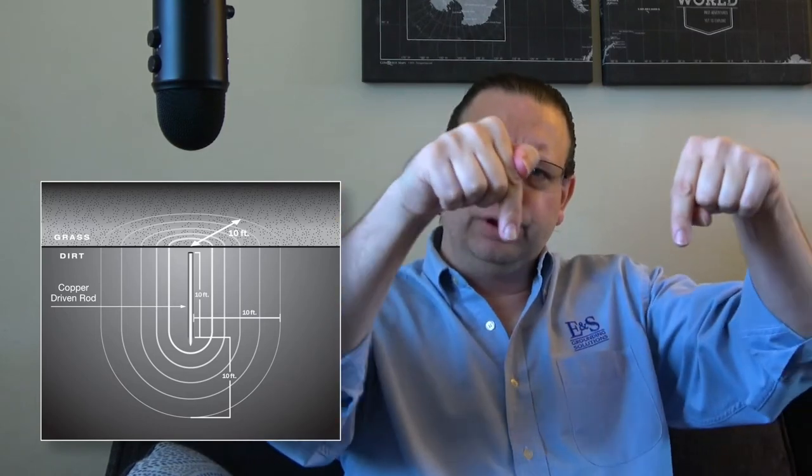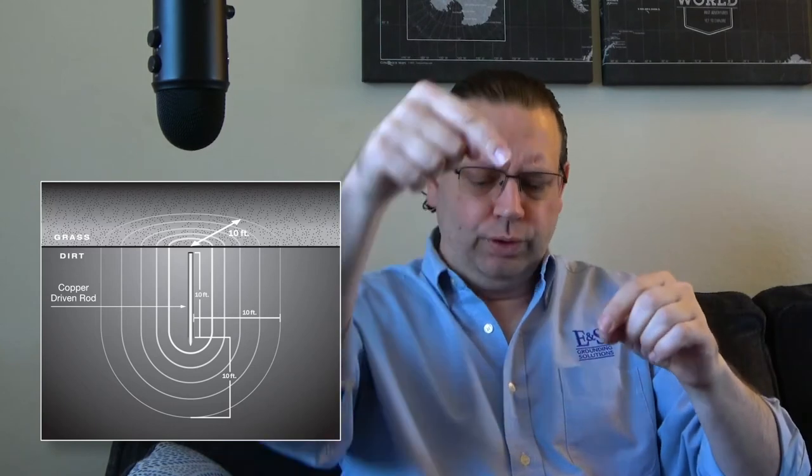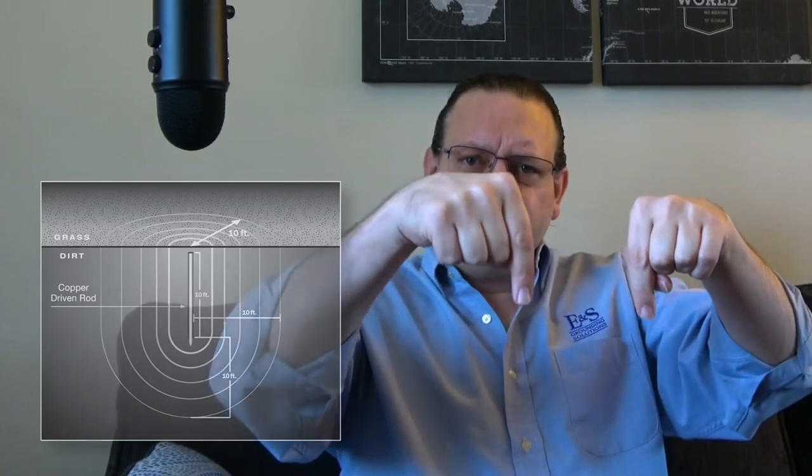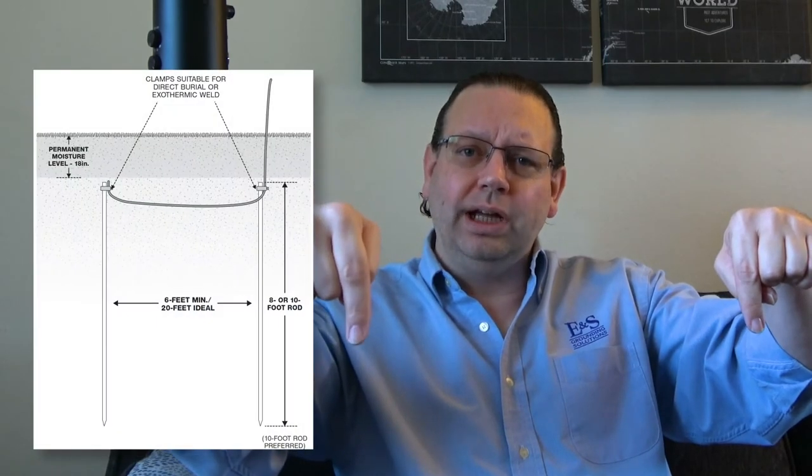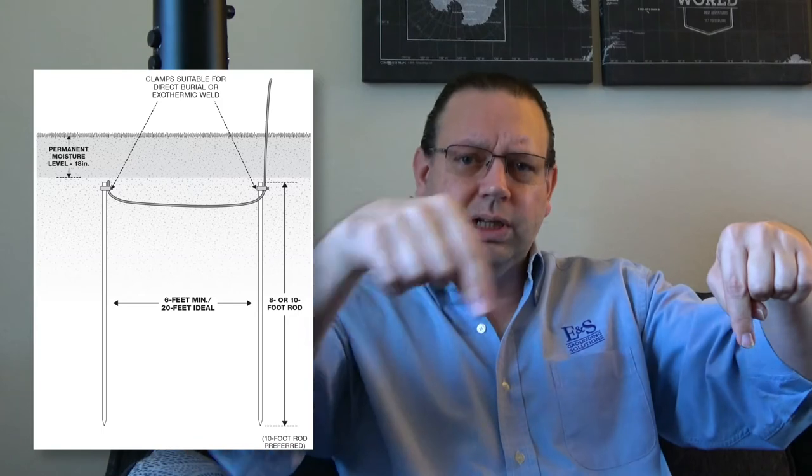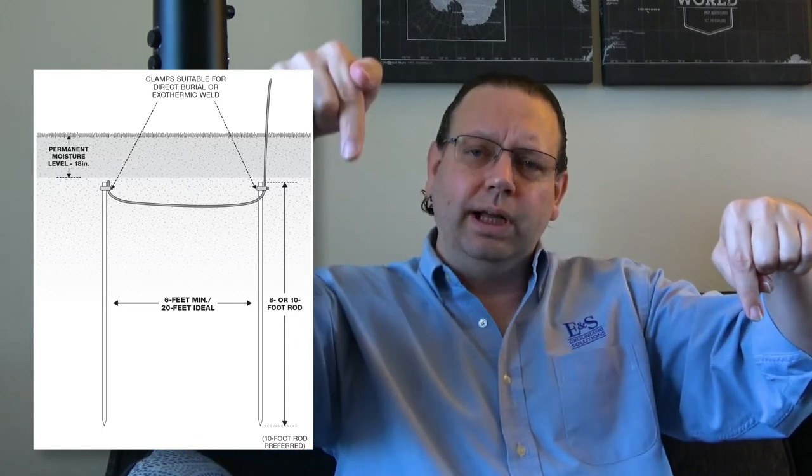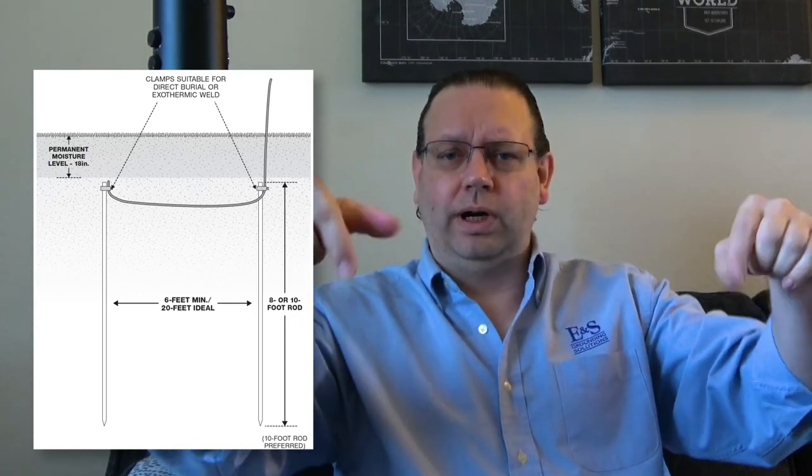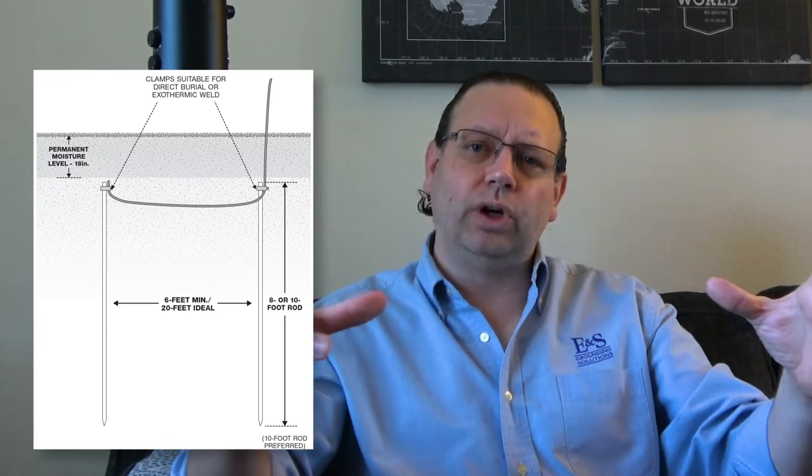If we put another eight-foot rod, it also has a silo. We don't want those two close together. You can imagine if you drove two rods literally side by side, it's the same thing as having a single rod. You can start marching those out further and further. Ideally, you want to be two times the distance from your rod. So if you've got an eight-foot rod, you want to go 16 feet away and put another eight-foot rod in the ground. That way those spheres of influence aren't overlapping. That maximizes the effectiveness of your ground rod.